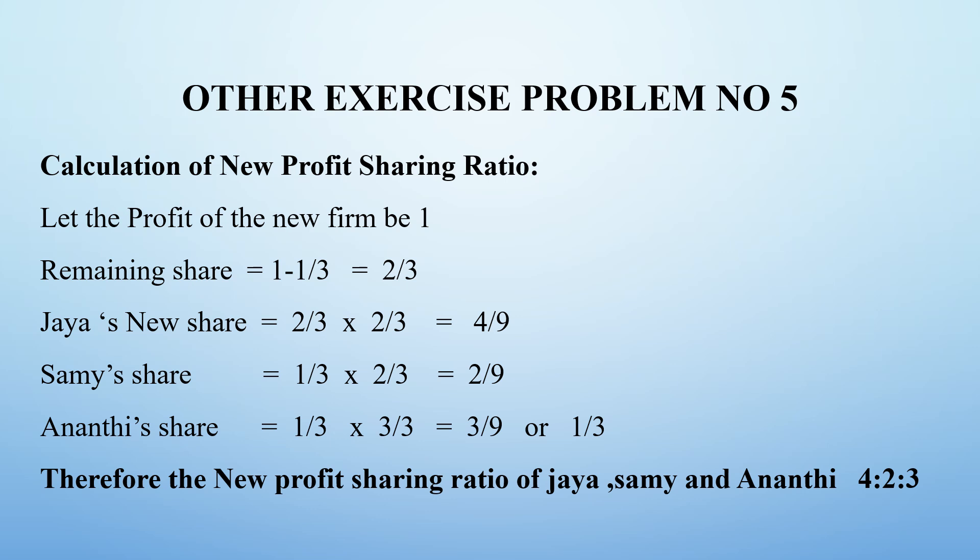In the case of the memorandum revaluation account, we need to find the new profit sharing ratio. If the share is given as a fraction, we assume the total profit of the new firm as 1. Anandhi is to be given 1/3 share in profit, so the remaining share is 1 minus 1/3, which equals 2/3. Jaya's new share is 2/3 into 2/3, which equals 4/9. Sami's new share is 1/3 into 2/3, which equals 2/9.